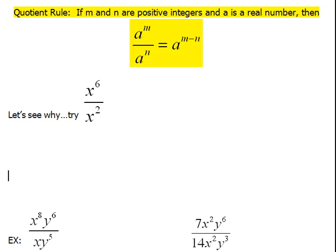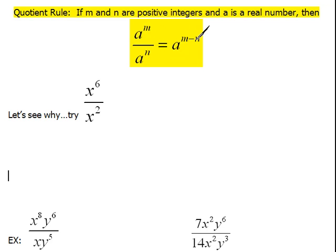This is called our quotient rule. Quotient meaning we have a division problem, but this one is talking about if we are dividing the same bases — some number raised to a power divided by that same number raised to a power. It could be a variable also. What we're supposed to do then is to subtract those exponents. When we divide like bases, we subtract the exponents.